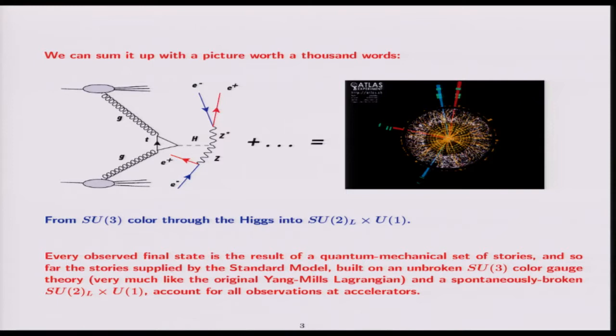Every observed final state is the result of a quantum mechanical set of stories a little bit like this one. Of course the equal sign, even with the plus dot dot dots, isn't quite right. It should be absolute value squared because this is a quantum mechanical process. So far the stories supplied by the standard model, built on unbroken SU(3) color gauge theory, very much like the original Yang-Mills Lagrangian except SU(3) instead of SU(2), and the spontaneously broken SU(2) left cross U(1), account for all observations at accelerators up until perhaps next month.